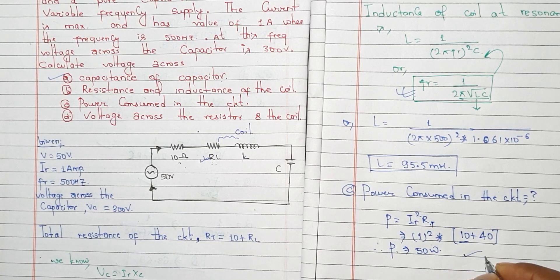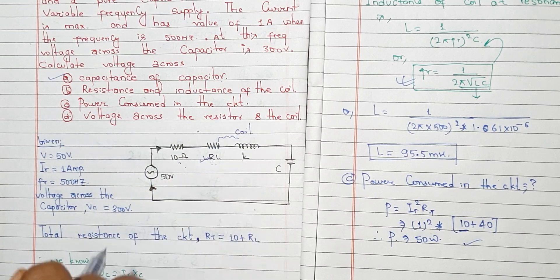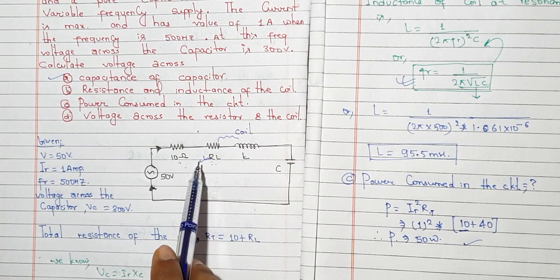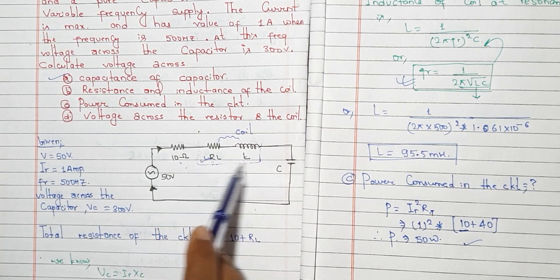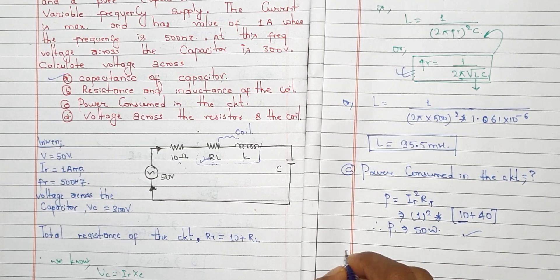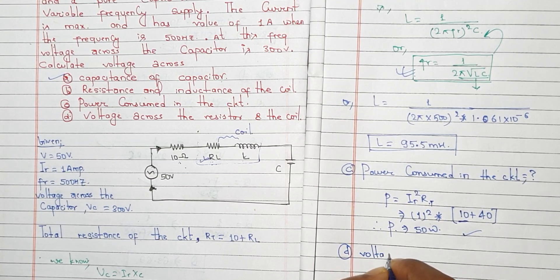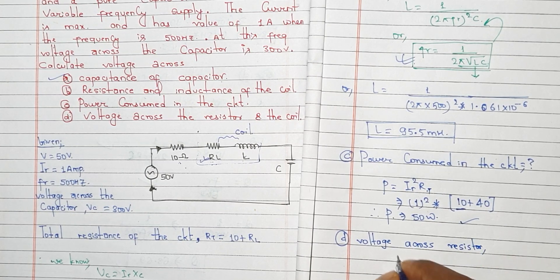Now let's find the voltage across the resistor and coil — how much voltage is consumed across the resistor. Voltage across the resistor V equals I times R.